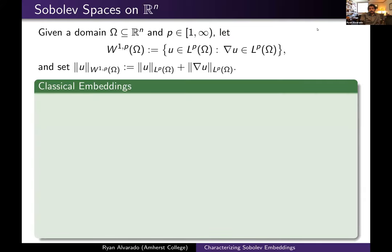One of the fundamental results in the theory of Sobolev spaces is the Sobolev embedding theorem, which highlights the fact that functions coming from W^{1,p} have certain nice properties depending on the relationship between the integrability exponent p and the dimension n of the underlying space.